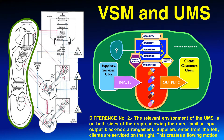Difference number two: the relevant environment of the universal management system is on both sides of the graph, allowing for the more familiar input-output black box arrangement. Suppliers enter from the left, and clients are served on the right. This creates a flowing motion.